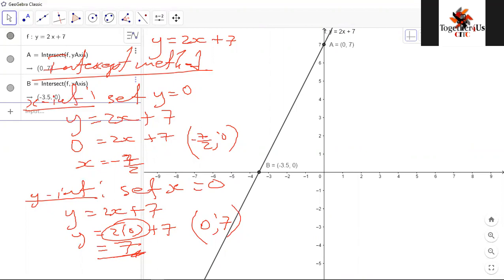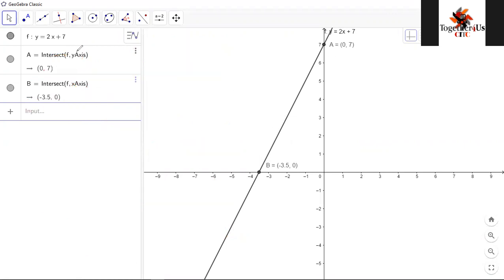What you guys would do is that you would actually find the intercepts, then plot them on your Cartesian plane. After plotting them, you then just join the two lines. Let me quickly illustrate this before I end this video.